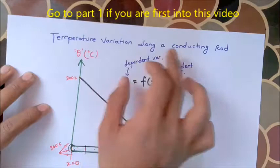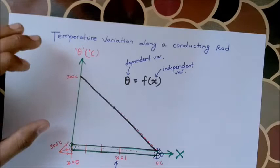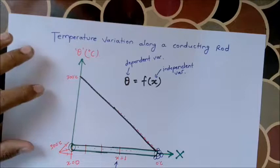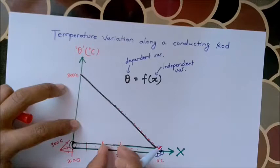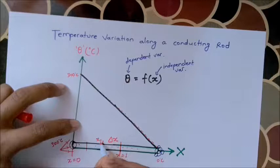This is the temperature variation, or the temperature distribution, of the conductor. This is the temperature gradient. This is the derivative policy. I will give you a little introduction. This is the derivative of delta x.